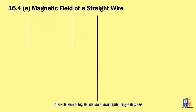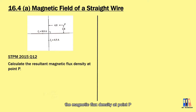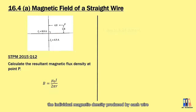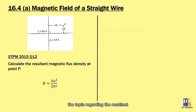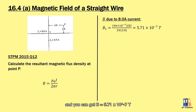Now let us try one example from a past-year paper, which is from 2015. We have two straight wires and we are going to identify the magnetic flux density at point P. Using the formula derived, we calculate the individual magnetic flux density produced by each wire. First, we calculate the magnetic flux density produced by the 8-ampere current. Substituting all values, we get B = 5.71 × 10⁻⁷ tesla.